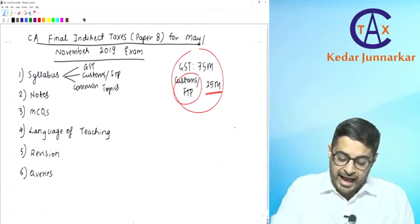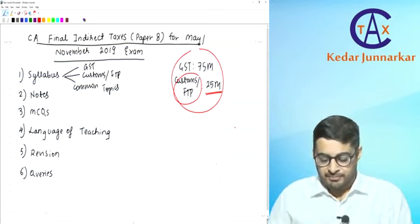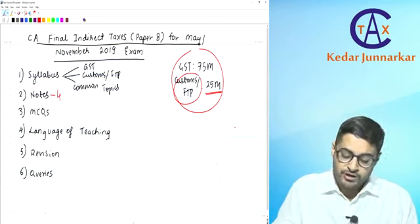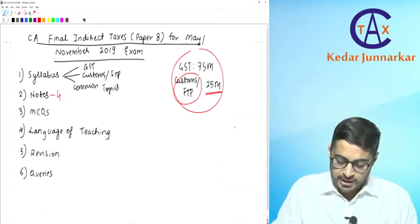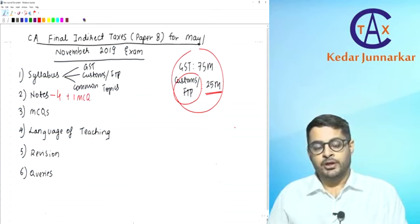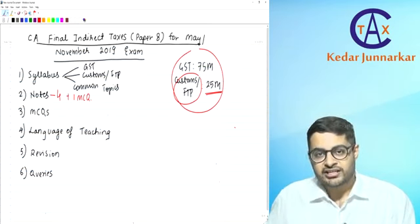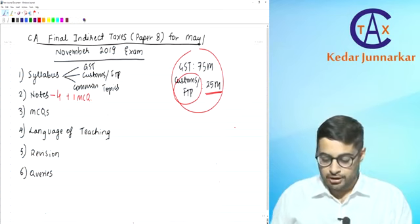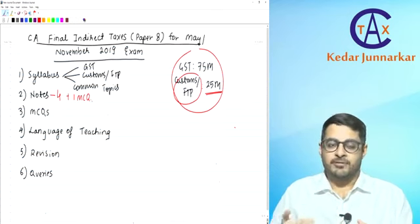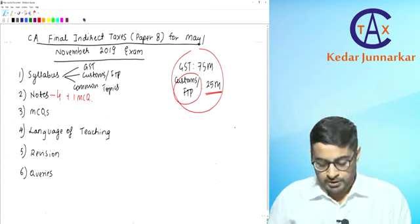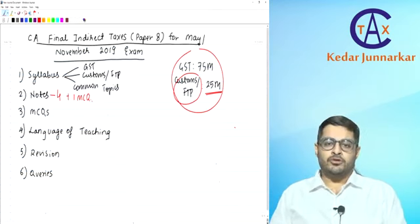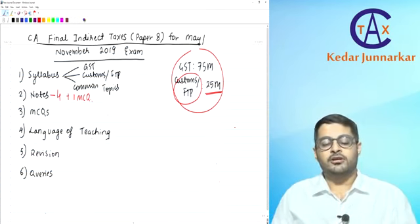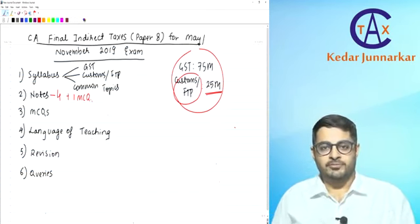Now regarding notes: we are going to provide you notes books. For the May and November 2019 exam, there will be four sets of main books plus one book for MCQs. There will be two books on GST, one book on Customs and Foreign Trade Policy, one book on Common Topics, and a separate MCQ book.